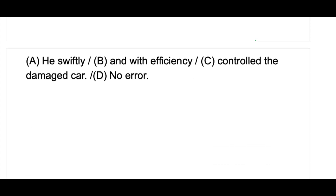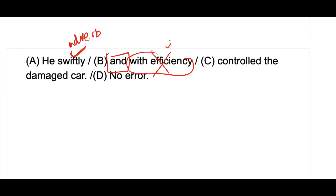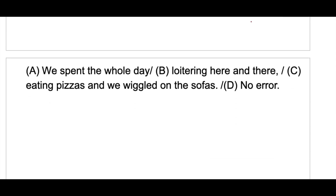Next: 'He swiftly and with efficiency controlled the damaged car.' The connector is 'and'. In the first part you have 'swiftly' — an adverb. So the second part also needs an adverb: 'with efficiency' is incorrect and should be replaced with 'efficiently.' So: 'He swiftly and efficiently controlled the damaged car.'